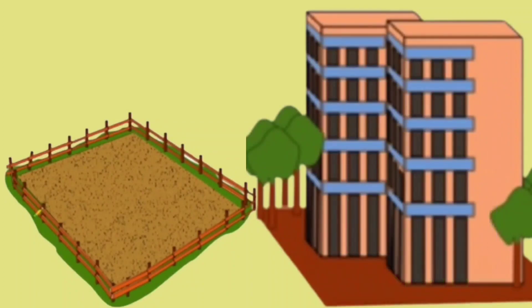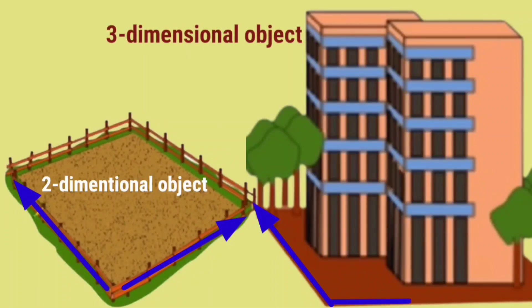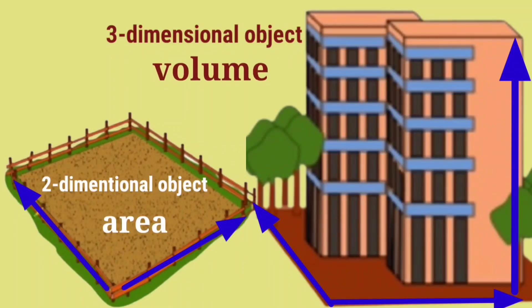This piece of land is a two-dimensional object which has a length and a breadth. And this multi-story building is a three-dimensional object which has a length, breadth and a height. Surface covered by a two-dimensional object is its area and the space occupied by a three-dimensional object is its volume.